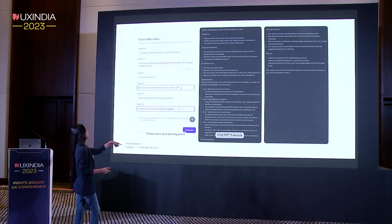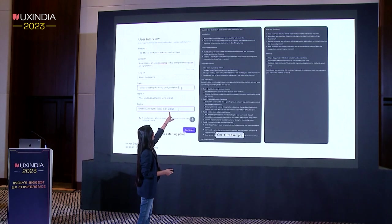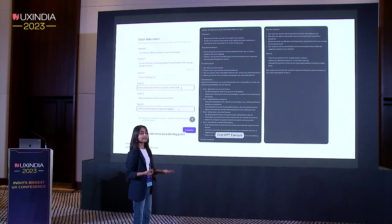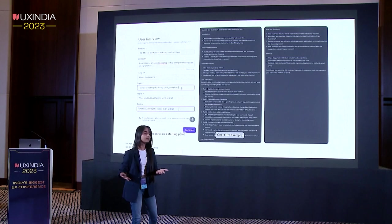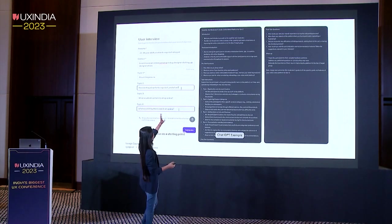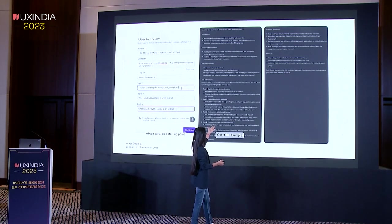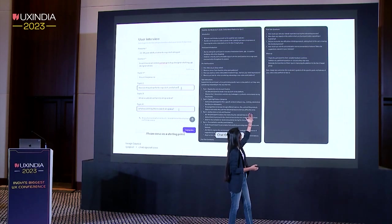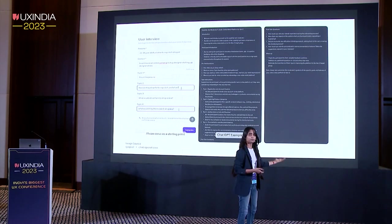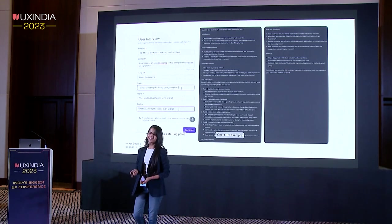The second example here is ChatGPT. I entered the prompt: generate a usability moderator guide for XYZ topic. And it gave me the introduction, the participant introduction, pre-test questions, then the test tasks that can be done, and then post-task questions as well as a wrap-up speech. Which I'd say is not bad.